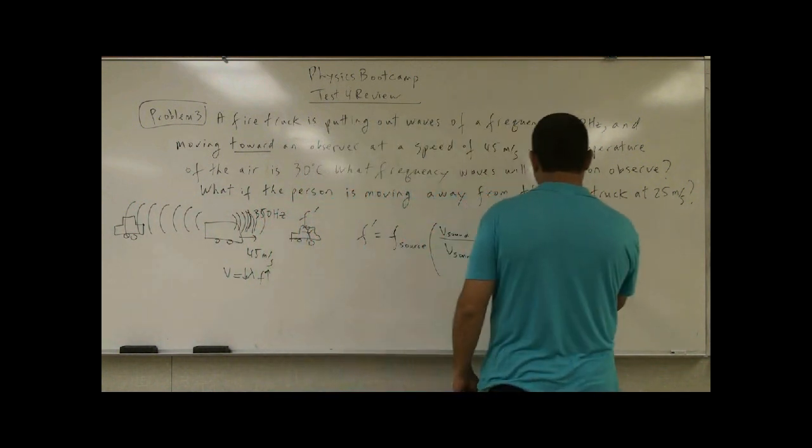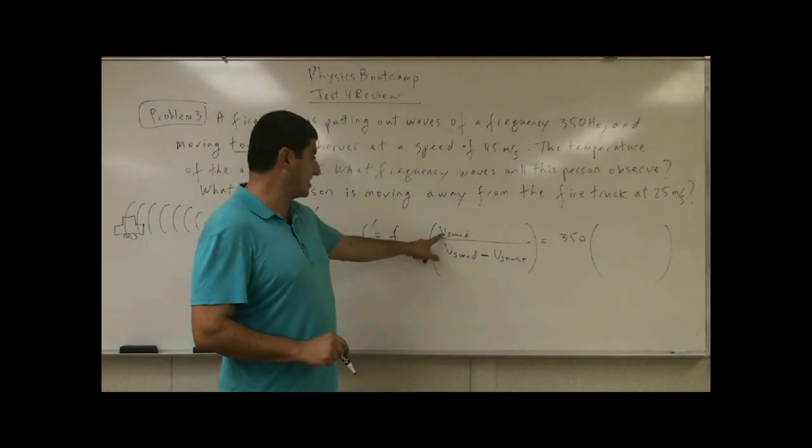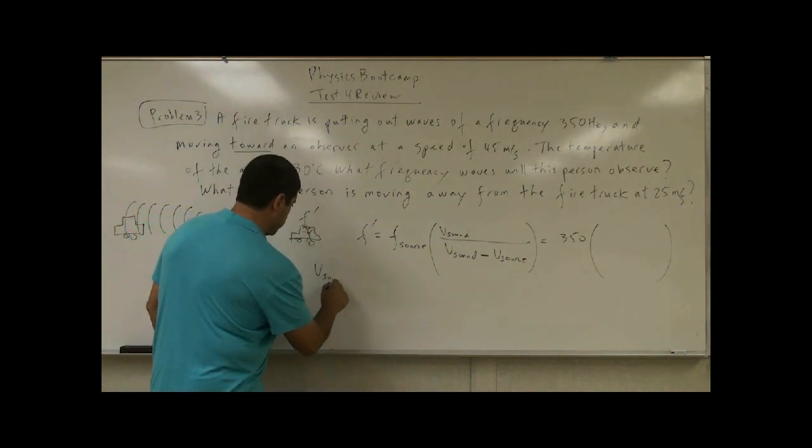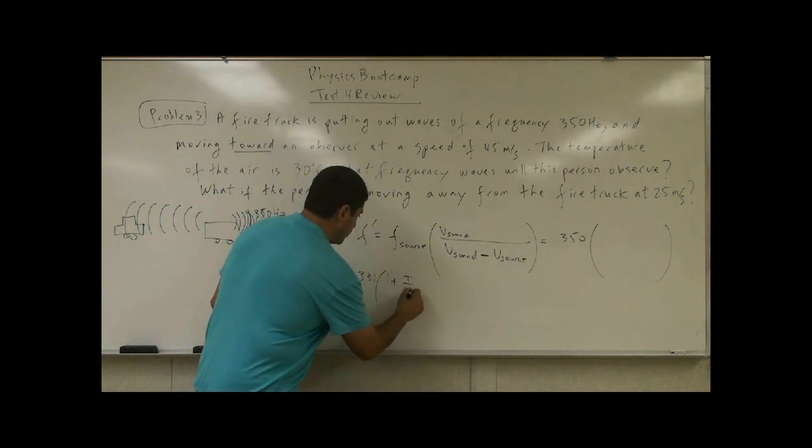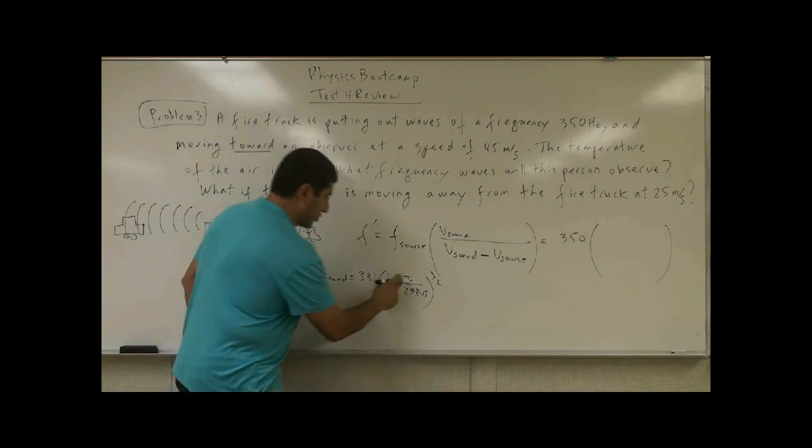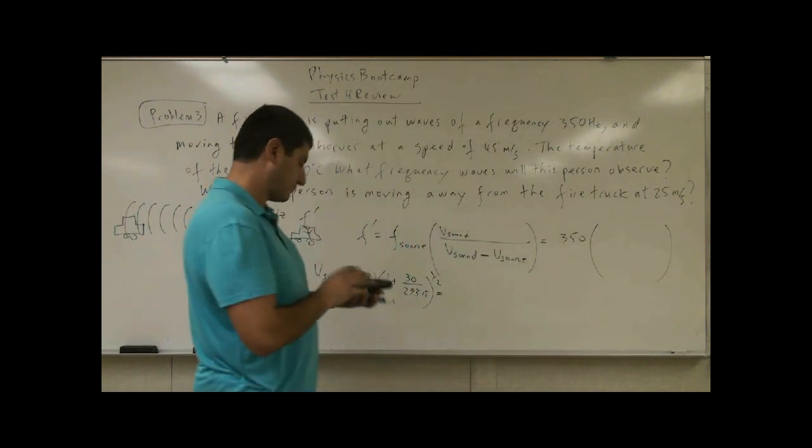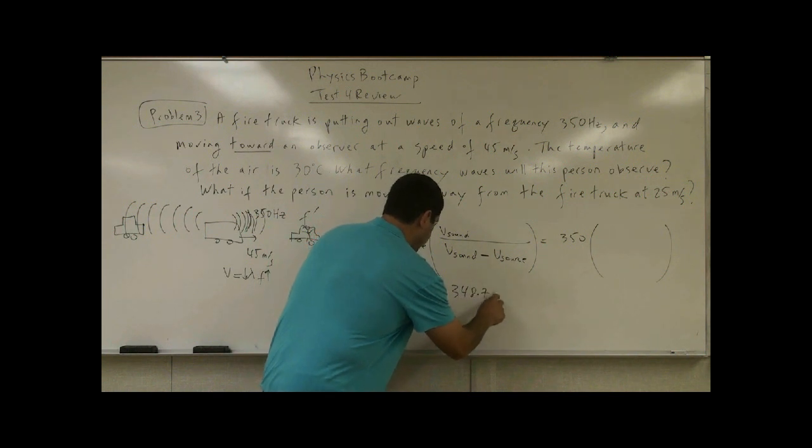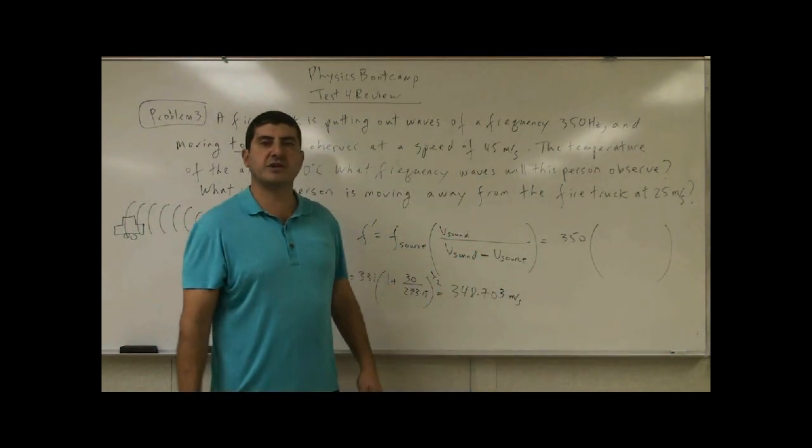So let's put it all in. 350. Now, before putting all in, what are we going to have to do? We have to calculate the velocity of sound at this temperature. So we have velocity of sound. We've used this before. 331.1 plus T over 273.15 to the one-half power. So we take the temperature of 30, we put it here. And let's calculate what this gives us. So this gives us 348.70. And we could have, if we want, one more digit 3, meters per second. So 348.703 meters per second. That's the velocity of sound.